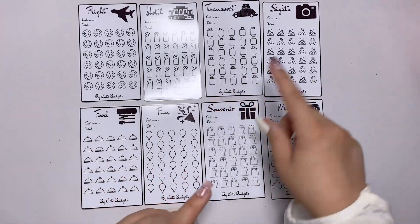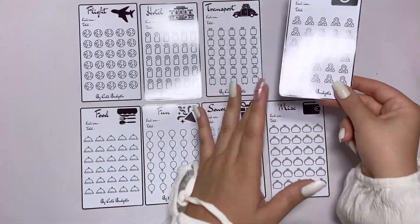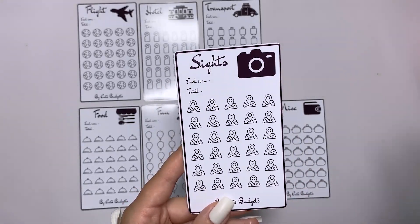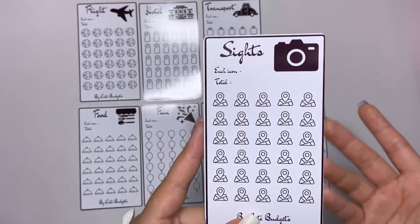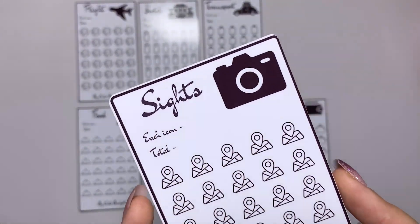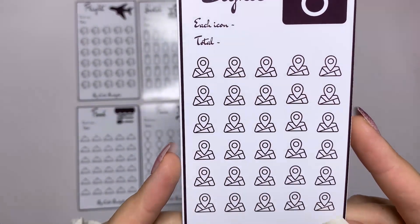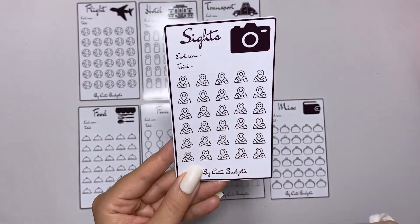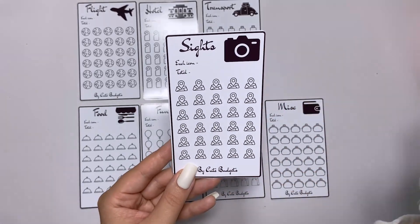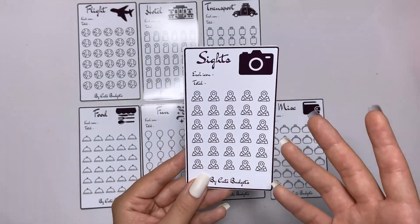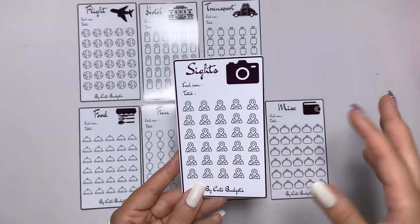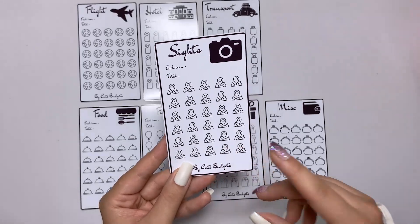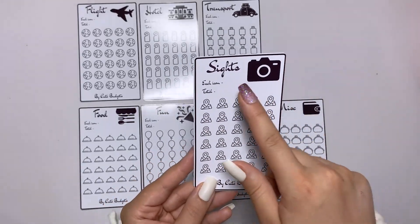Now after that, for me it's sightseeing, like what you want to see in a specific country in a specific city. Let me show you. Again here is 30 icons as well, so the same way you can check. Whenever you plan where you go, you can check prices, divide that amount into 30, and each icon will equal to that amount.